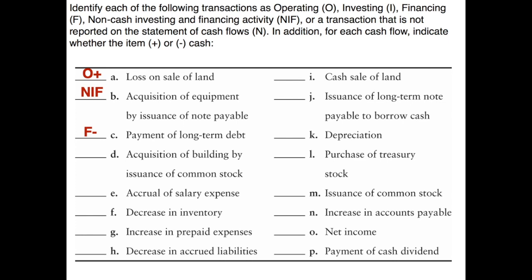Acquisition of a building by issuance of common stock: first ask whether cash is being affected — it is not. We're buying a building, which is an investing activity, and buying it by issuing stock, which is a financing activity, with no cash involved. So this appears in the non-cash investing and financing schedule. For the accrual of salary expense: this is a build-up of salary expense we're not paying. It has reduced net income but didn't affect cash, so in the operating activity section we add it back to net income — it's an increase.